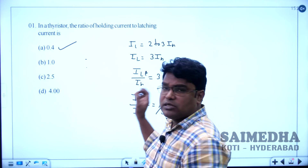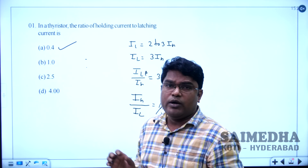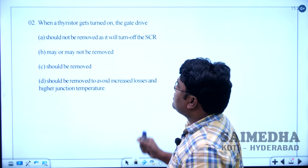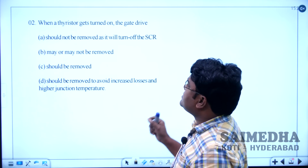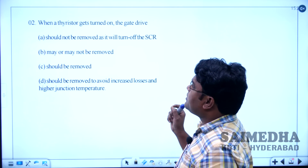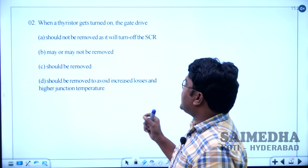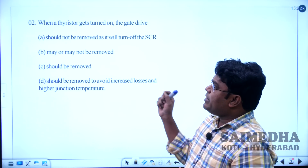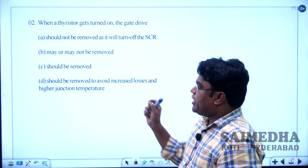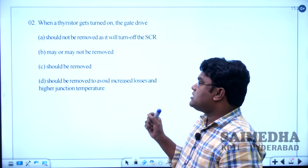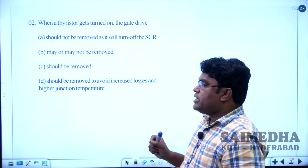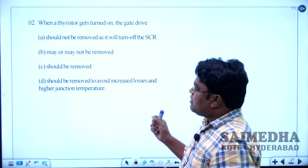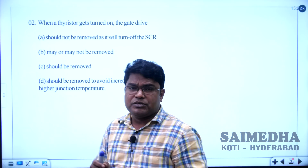Let us solve question number 2. The question is: when a thyristor gets turned on, the gate drive — option A: should not be removed as it will turn off the SCR, option B: may or may not be removed, option C: should be removed, option D: should be removed to avoid increased losses and junction temperature.